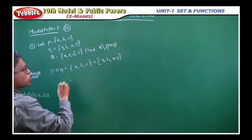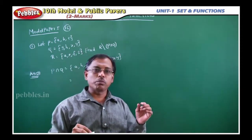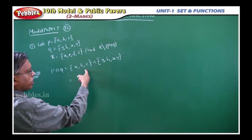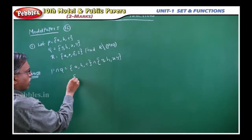So intersection means what? The elements which are present in both the sets. So here A, B, C different and G, H, X, Y different. So null set.